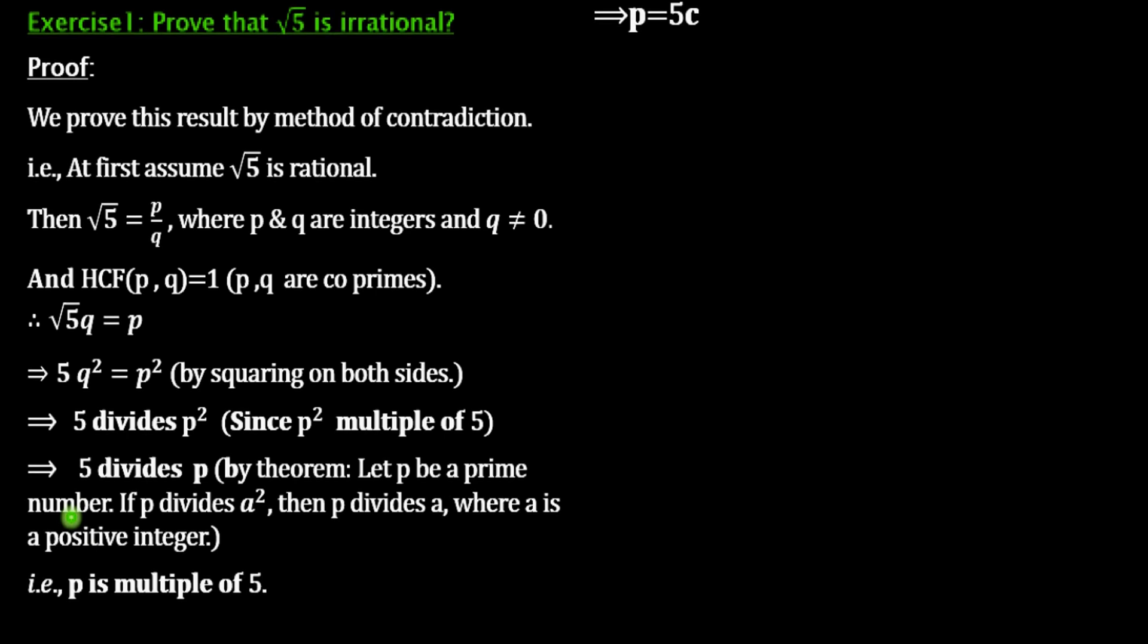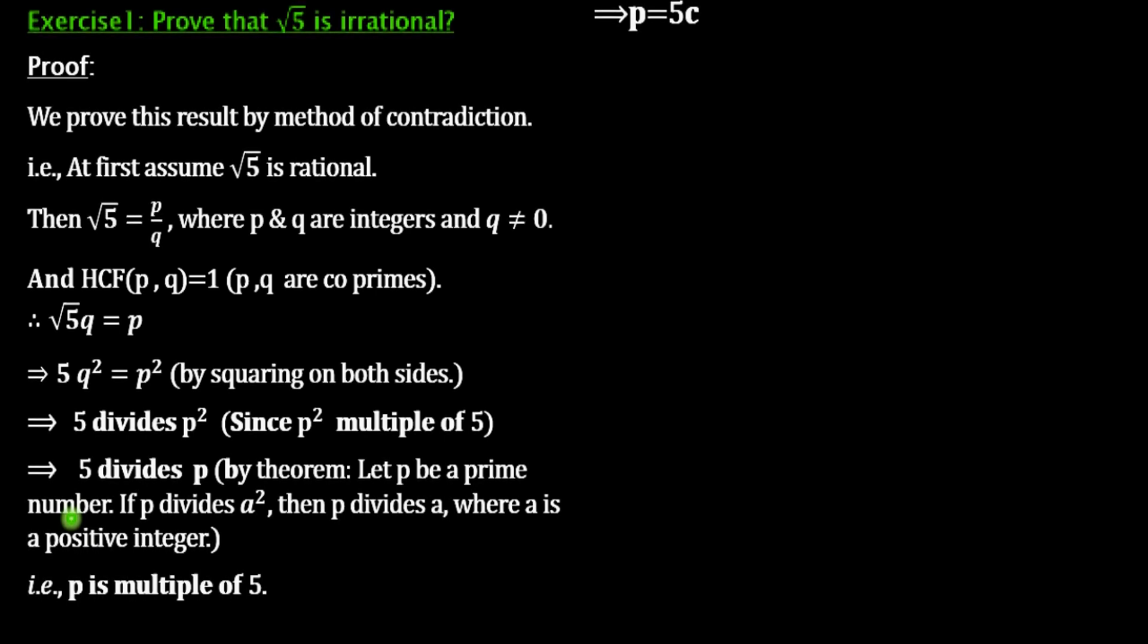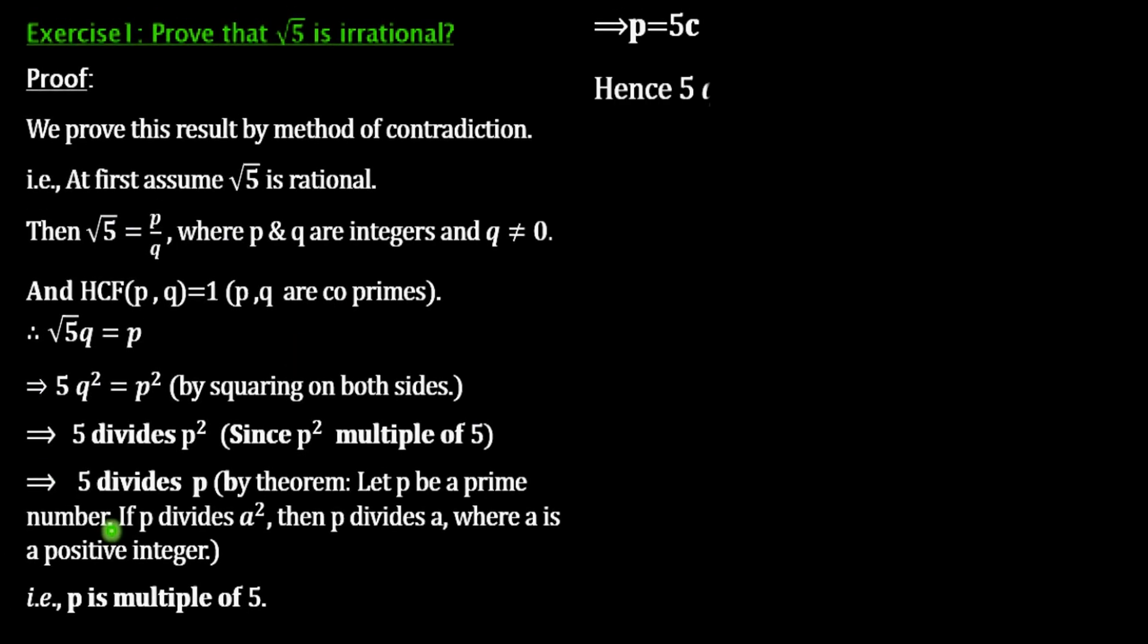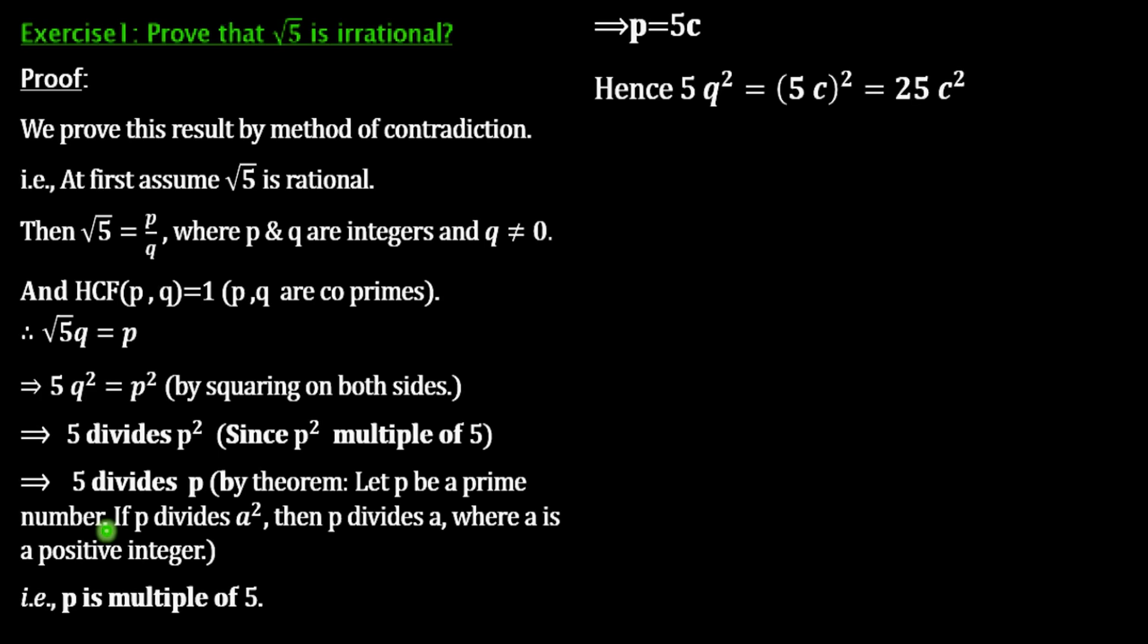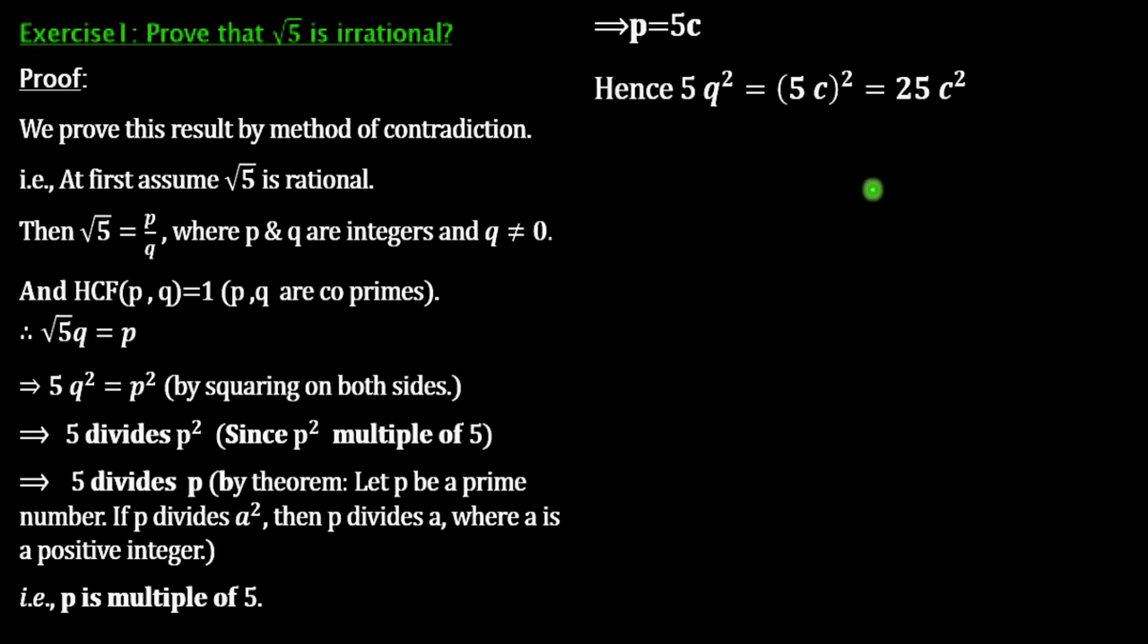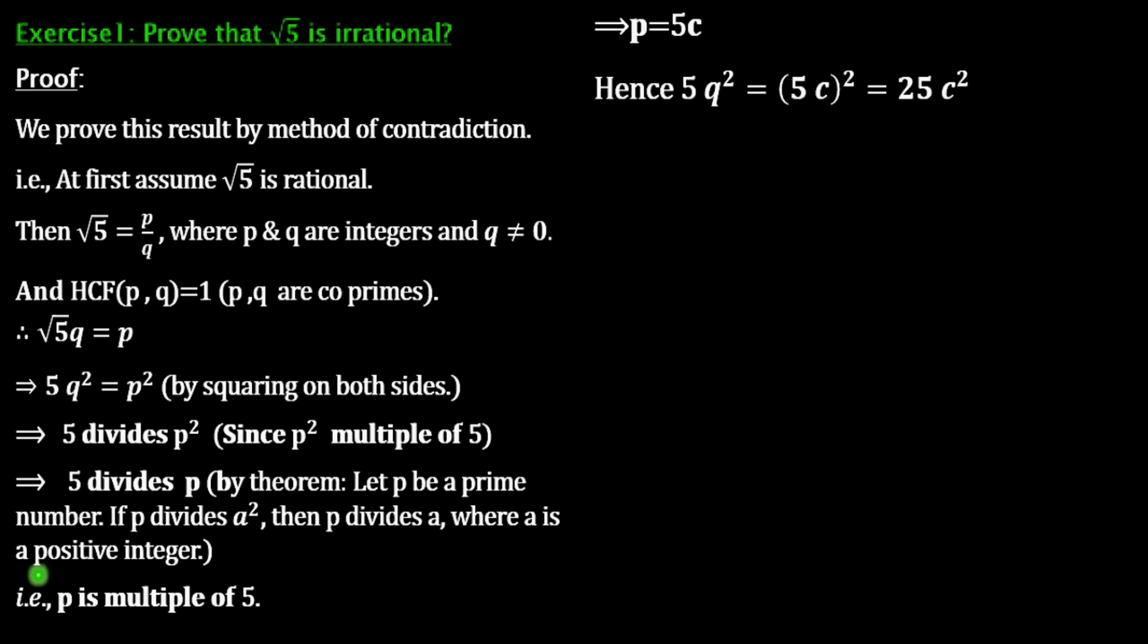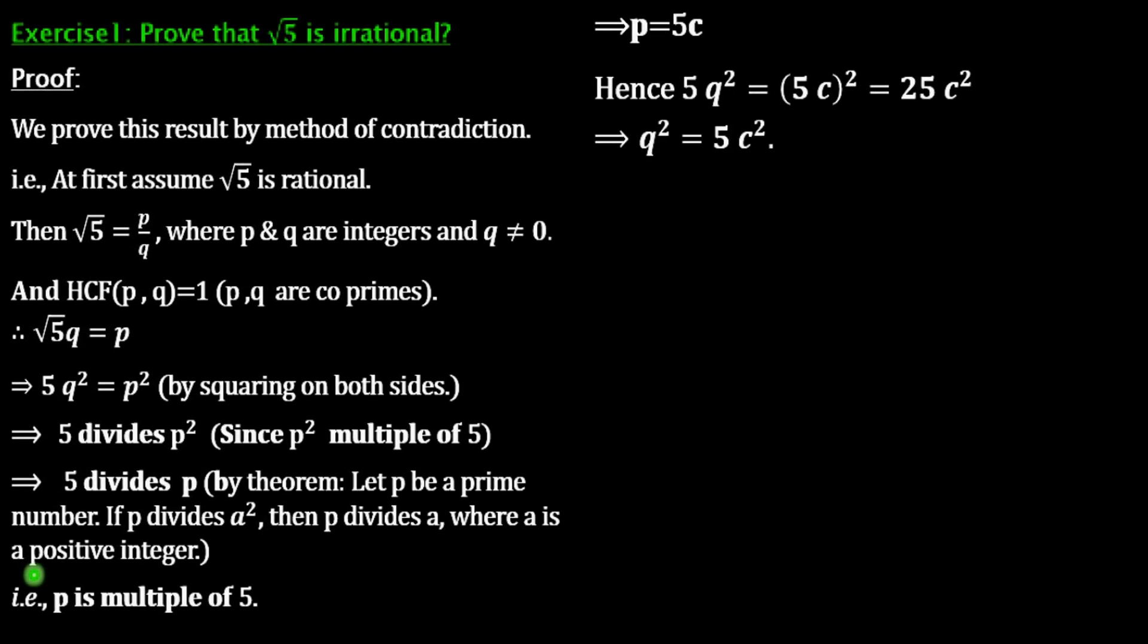If P = 5C, what next? What is P²? If P = 5C, P² = 25C². That is, 5Q² = 25C². Here, 5 is common here, 5 is common here, canceling each other. Q² = 5C².